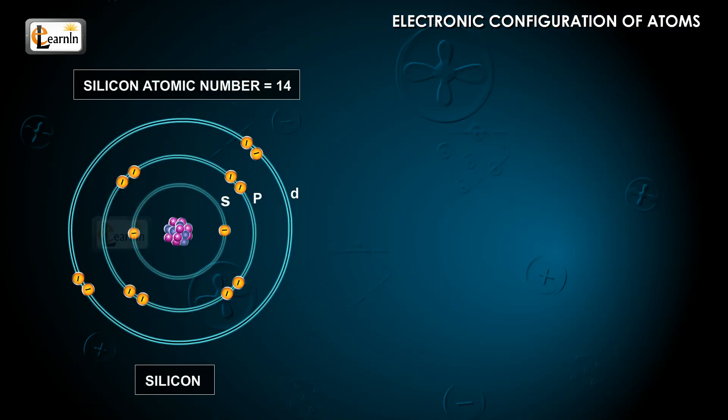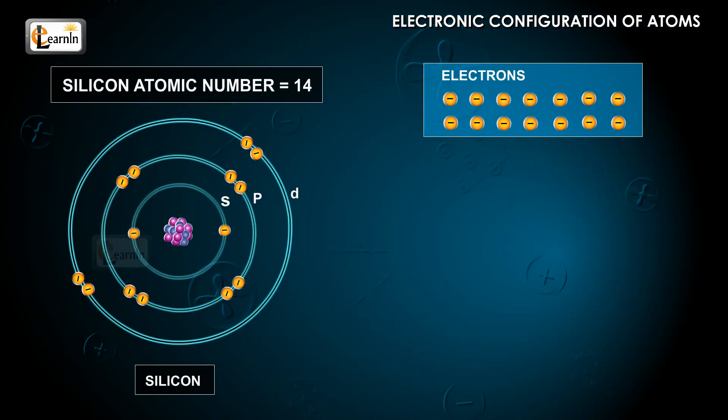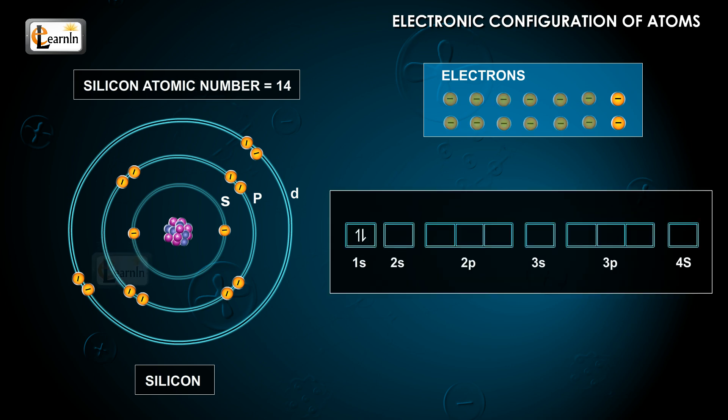Consider the example of silicon, whose atomic number is 14. 12 electrons can be accommodated in 1s, 2s, 2p, and 3s orbitals.